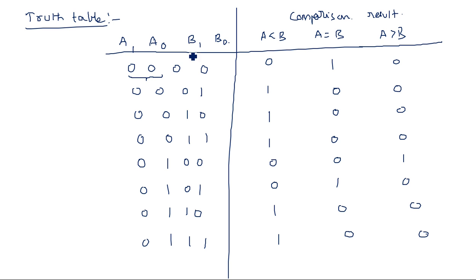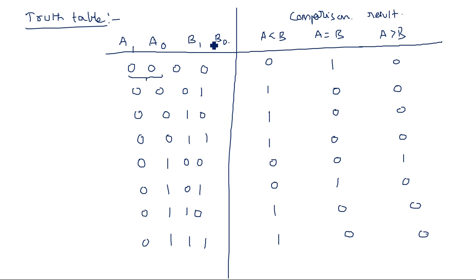Now let us consider the K-maps for the simplification of the expressions: A less than B, A equal to B, and A greater than B. We need to extend the truth table up to all 16 combinations.